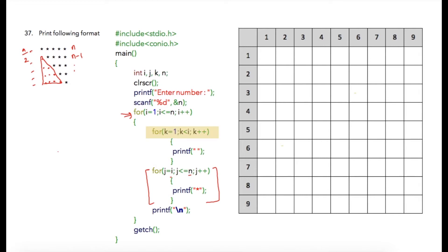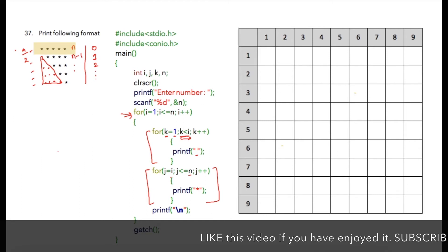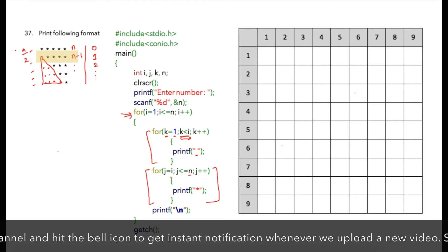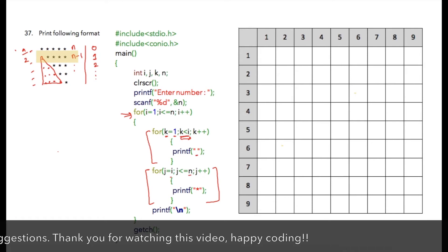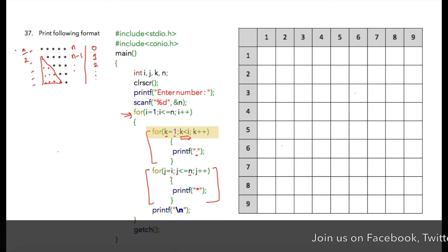To add the spaces we use another variable k. On the first row there are zero spaces, on the next row one space, and on the third row two spaces, and so on. We need to print these spaces for less than i iterations. This for loop starts k from 1 with condition k less than i. On the first row this loop will not execute because 1 is not less than 1, but on the second row the condition 1 less than 2 is true, so one space will be printed. Then k increments to 2 and the condition becomes false, terminating the loop.